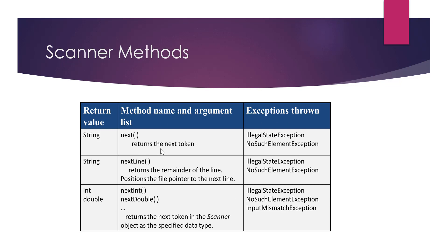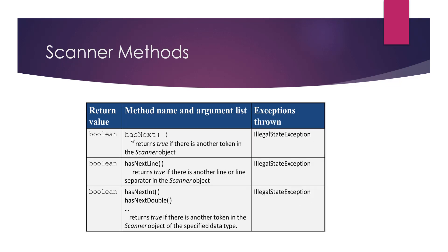So what we need to do before we read is check: do we have data there or not? We can use the hasNext method, which returns a boolean — true if we have a next value, false if we do not. hasNextLine checks if there is another line in this file. hasNextInt checks if the next value is an integer, and hasNextDouble checks if the next value is a double. Before we read, we need to check that we have a value to read.